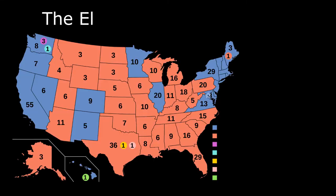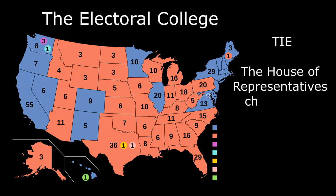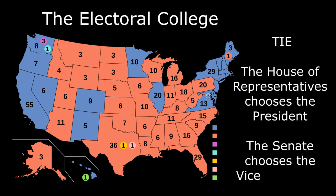Amendment 12: The Twelfth Amendment set up the Electoral College for voting in the President and Vice President. If there is not a majority vote for one person, the House of Representatives chooses the President and the Senate chooses the Vice President.